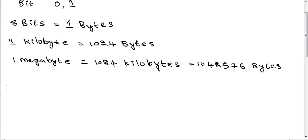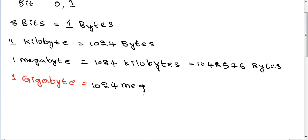Next, one gigabyte — that is called one GB. One gigabyte equals 1024 megabytes.